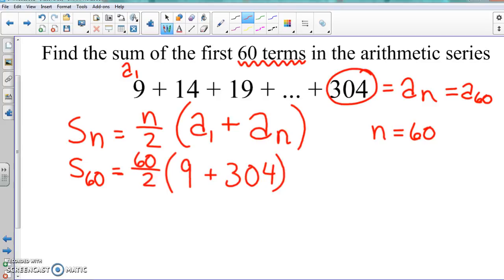We just punch the calculator, find an answer. So the sum of the first 60 terms is 9390.